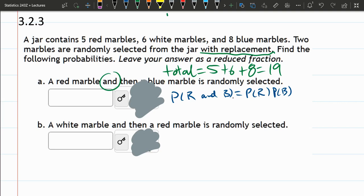So we're going to reset the jar, which is why they're independent. Pulling whatever we pull out the first time doesn't affect what happens the second time. So we get to just multiply these probabilities.